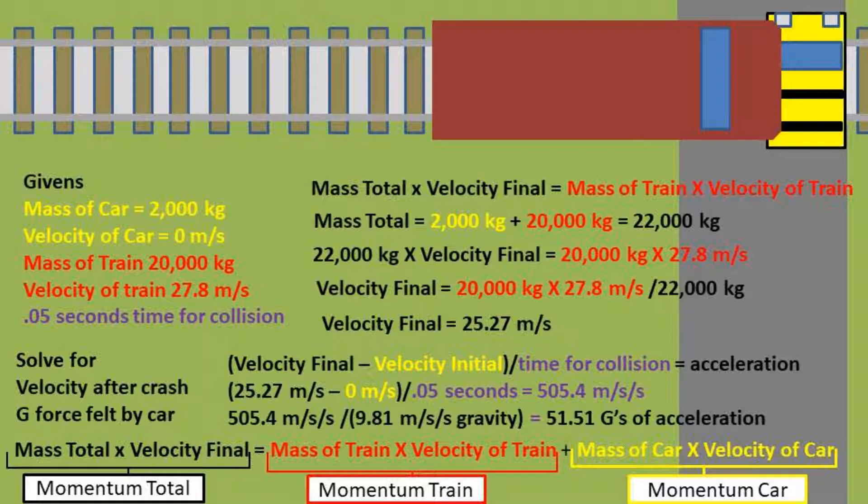Now for our final step, we will take the acceleration that we found over the acceleration due to gravity to get how many g's the cars pulled. It pulled 51.51 g's of acceleration. This means that it experienced 51.51 times the acceleration due to gravity.